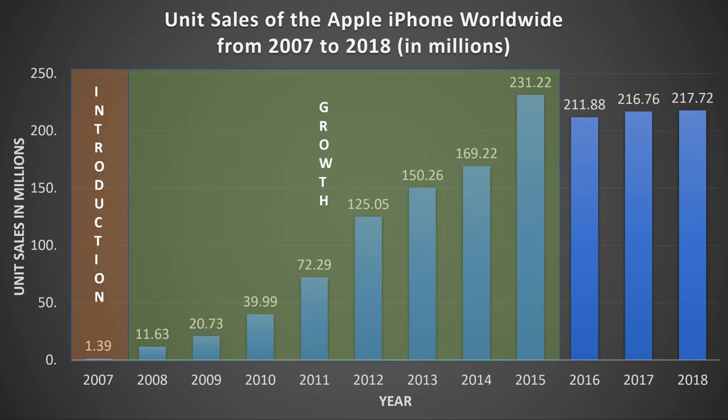However, what you can clearly see from 2016 onwards is the iPhone hitting the maturity stage, within which sales actually decreased for the first time ever — a 19.3 million decrease in unit sales in comparison to the previous year.